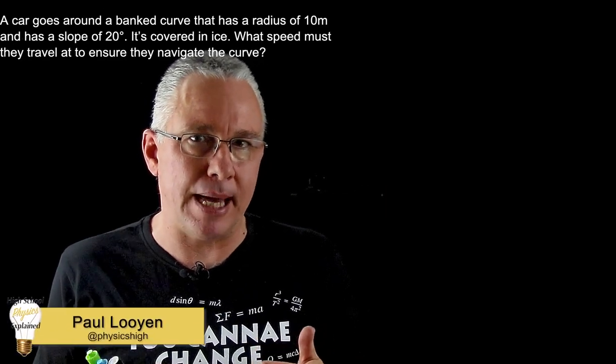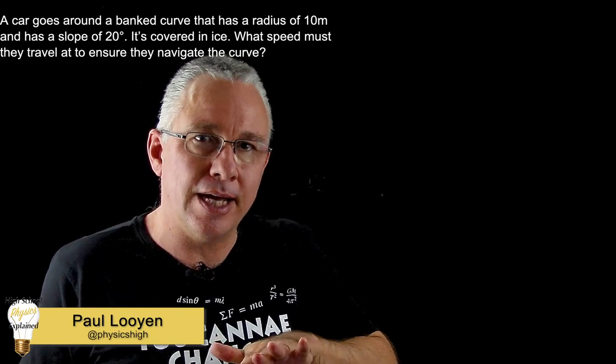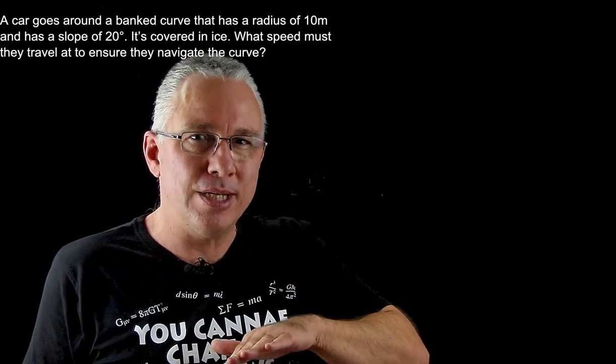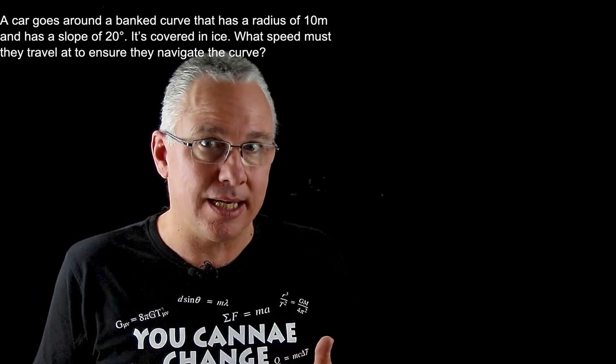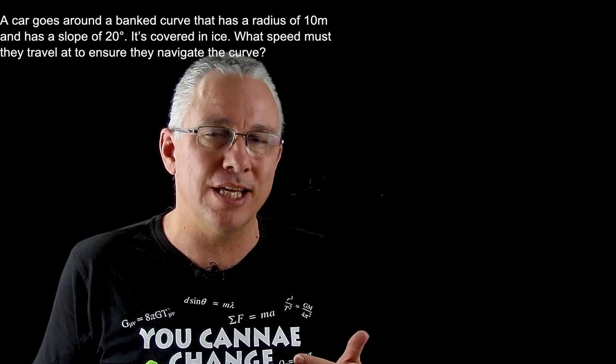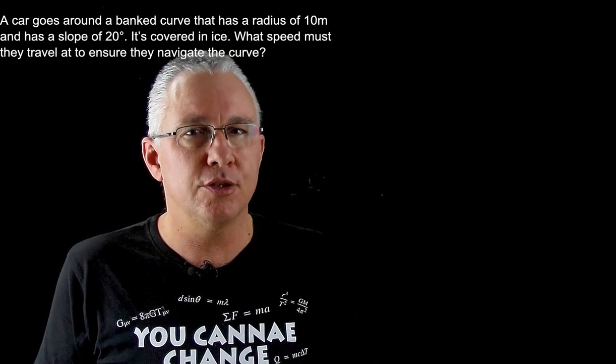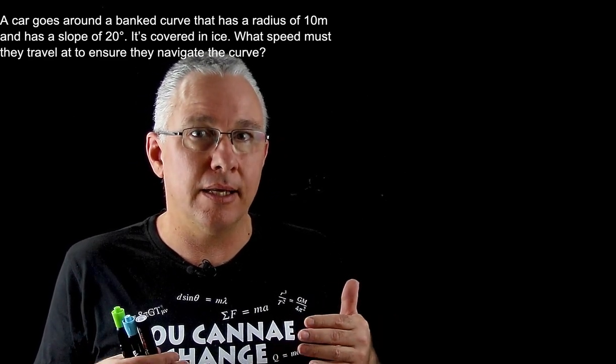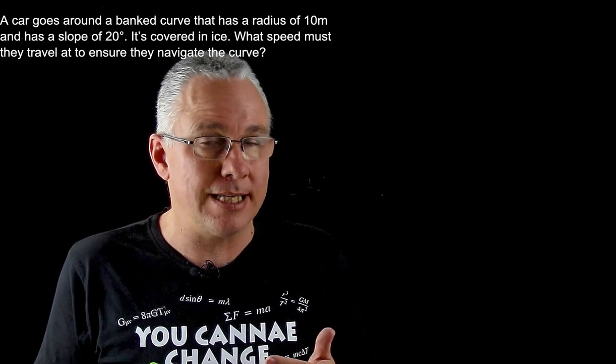In this problem we have a banked situation. A car is going around a curve where the road is angled up. What that does is it increases the normal force and therefore increases the centripetal force and allows it to go around the curve faster.